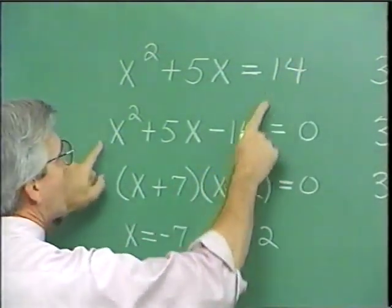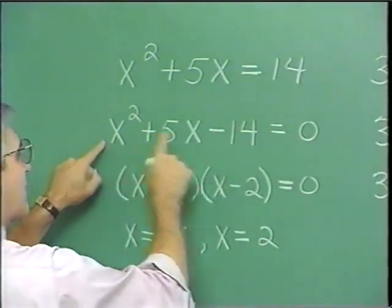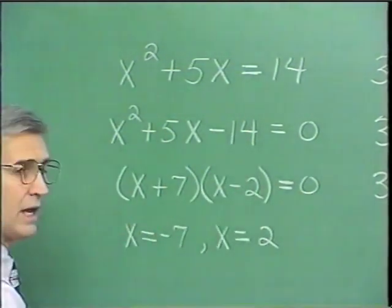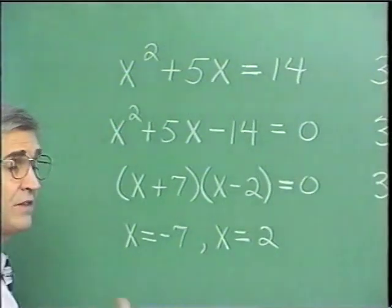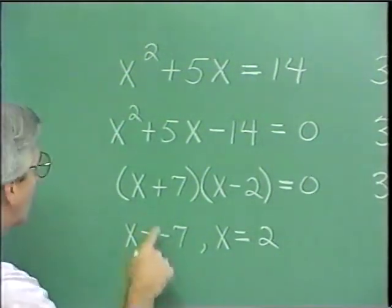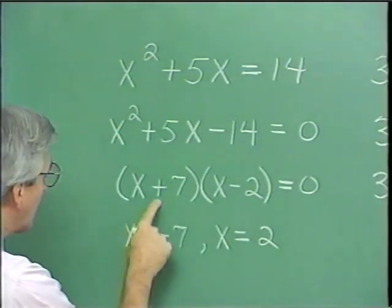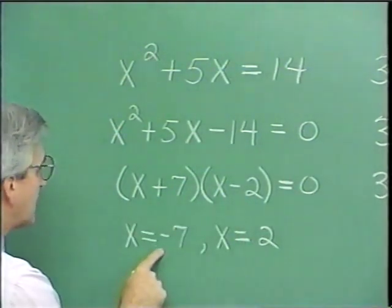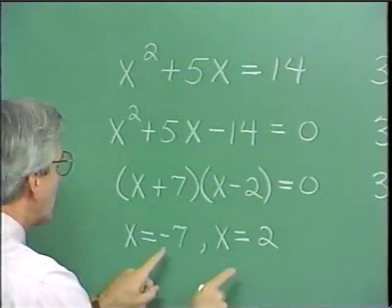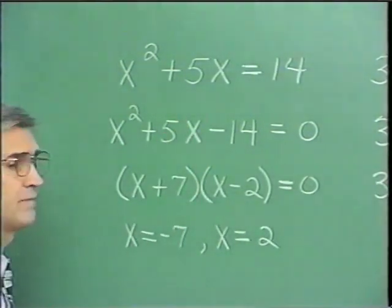We put the terms on one side by subtracting 14 on both sides. Then we factor this trinomial into x plus 7 times x minus 2. We simply ask ourselves: what value of x will cause each factor to become zero? This factor becomes zero when x is negative 7; that factor becomes zero when x is 2. So negative 7 and 2 are the solutions to the equation.